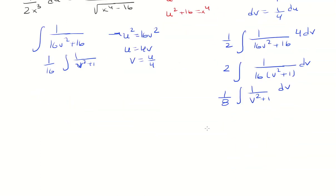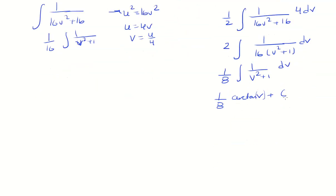The antiderivative of 1 over v squared plus 1 is arctan of v, plus a constant C. Recalling that v was u over 4, we replace v with u over 4. And u was the square root of x to the fourth minus 16, so we substitute that back in to get our final answer: one-eighth arctan of the square root of x to the fourth minus 16, all over 4, plus C.